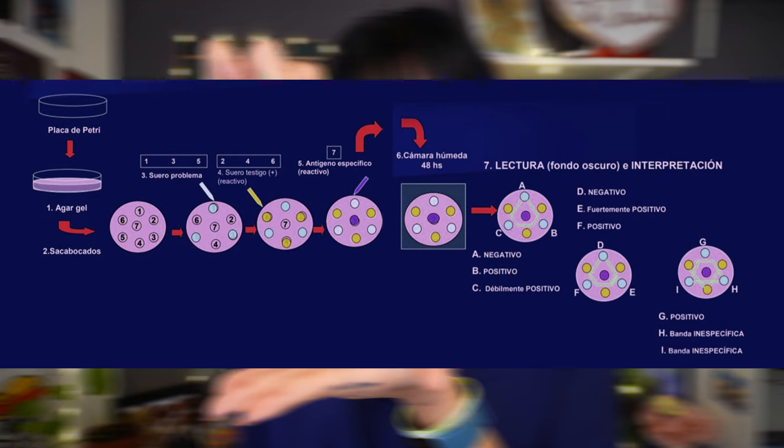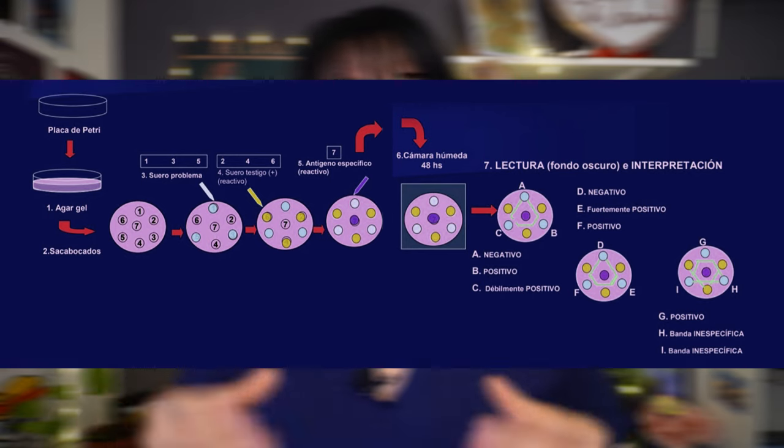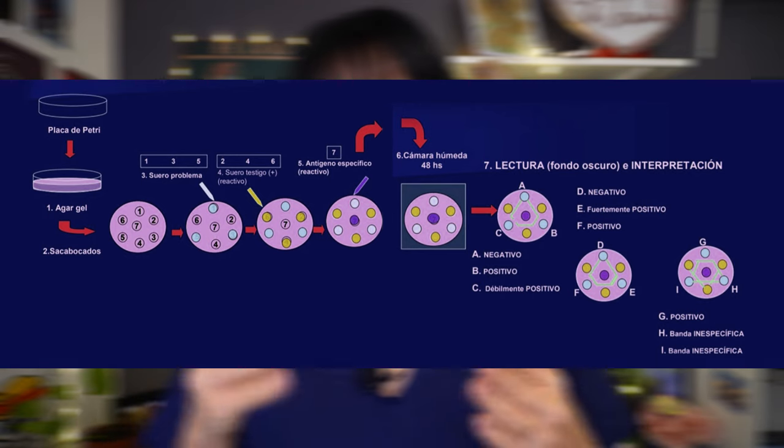When using radial immunodiffusion, the samples are placed in a central position and the antisera in a ring around them. The distance traveled by the precipitation line is then used to measure the amount of protein in that sample. Again, this serves to diagnose certain diseases and even to monitor the response to treatment given for that disease.